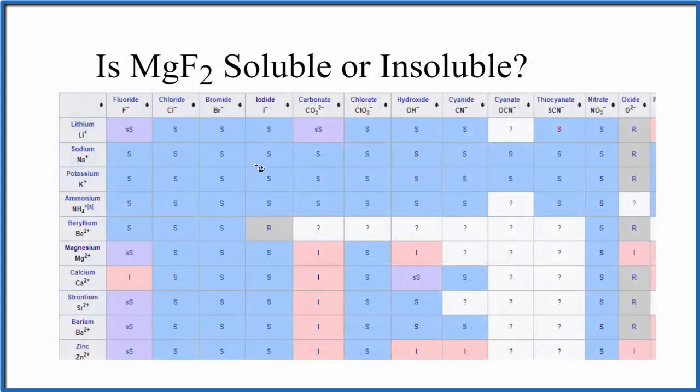This is part of a larger solubility table. We're going to look for magnesium first, and magnesium is right here, and then fluoride right here. As we go down, right here, magnesium fluoride is slightly soluble.